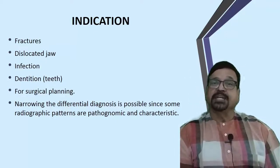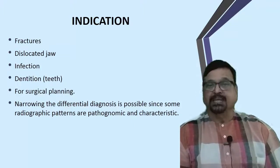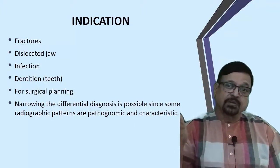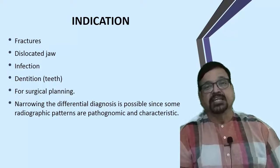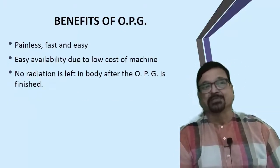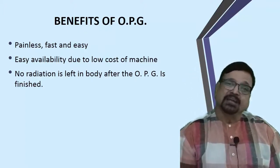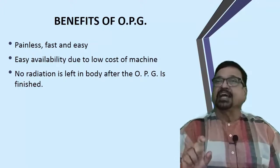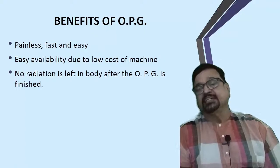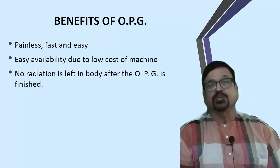For surgical planning, OPG is useful both for the oncologist - to know where the disease has spread and how much bone involvement there is - and for the orthopedic surgeon to know the number and type of fractures. Because of specific appearances it narrows down the differential diagnosis. The benefits include: it is painless, easy, available everywhere, low-cost machine, low OPG cost, low radiation dose, and patients can be protected by a lead gown during the procedure.